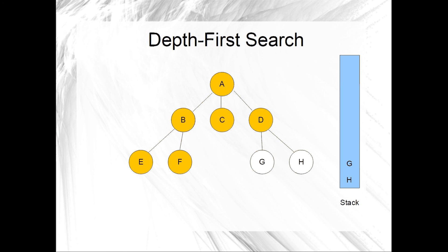Since the stack is not empty, we will have another iteration. The next iteration begins by popping G off the stack and marking it. Next, we push all adjacent unmarked vertices onto the stack — there are none. We will have another iteration. That iteration begins by popping H off the stack and marking it. Next, we push all adjacent unmarked vertices onto the stack — there are none. Now, since the stack is empty, we will not have another iteration, and the algorithm has completed executing.